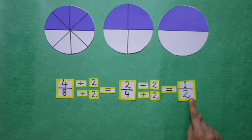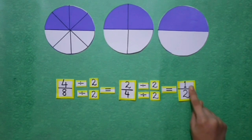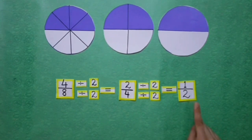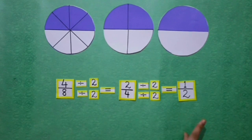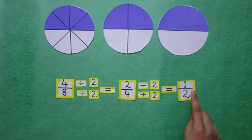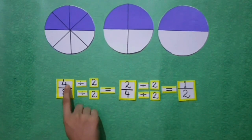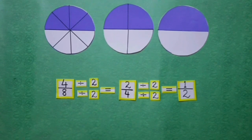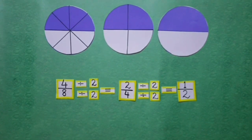Students, now in 1 upon 2, both numerator and denominator cannot be divided by any other number other than 1. So we get 1 upon 2 as the simplest form of fraction 4 upon 8.